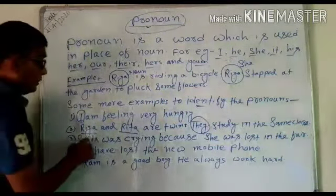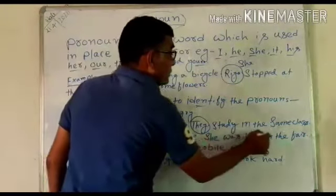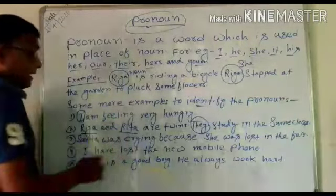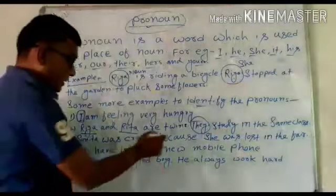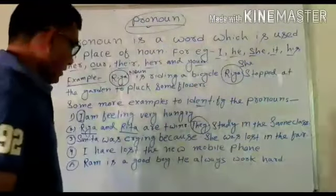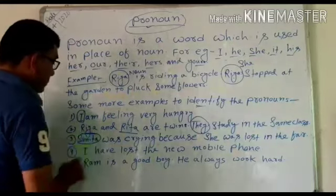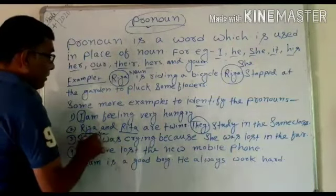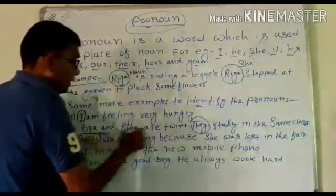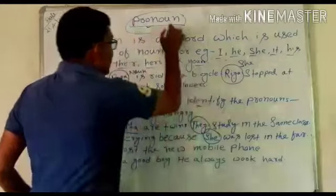Next example: Sunita was crying because she was lost in the fair. Sunita was crying — Sunita is the noun here. But in place of Sunita, the word 'she' is used. She is the example of pronoun.